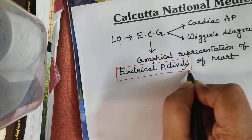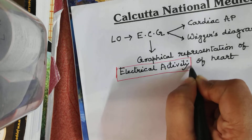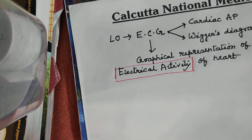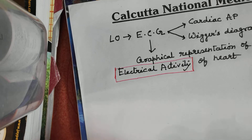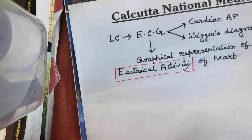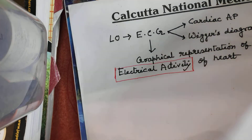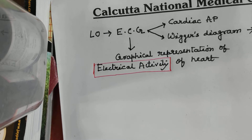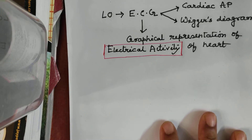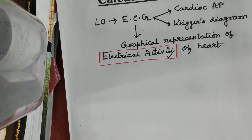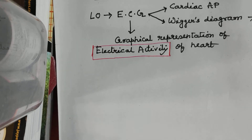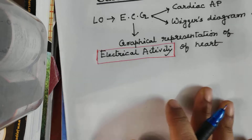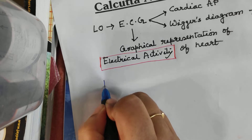From our previous lessons we know about the electrical activity of the heart. We have two types of cells in the heart: one is pacemaker cells, which have a different kind of electrical activity, and we have the working myocardial cells, which have a different type of electrical activity. Now we want to revisit a few basic points about this electrical activity.